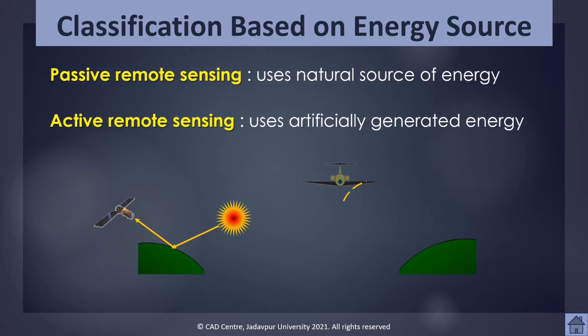Active sensors can be used for examining wavelengths not sufficiently provided by the sun, such as microwave energies, or to better control the way a target is illuminated. For example, the energy from the sun may have several polarizations, but if we use artificial energy, we can provide energy in a specific polarization. However, active systems require the generation of a fairly large amount of energy to adequately illuminate the target. The laser fluorosensor and synthetic aperture radar (SAR) are some examples of active remote sensors.